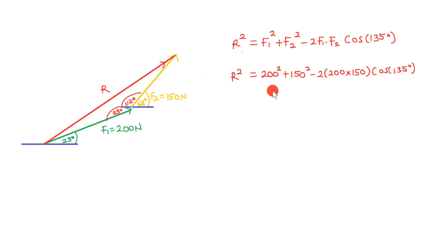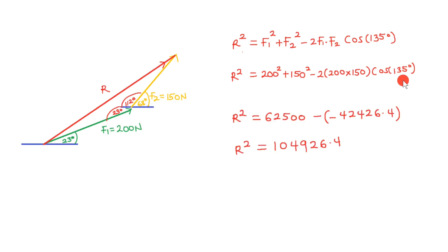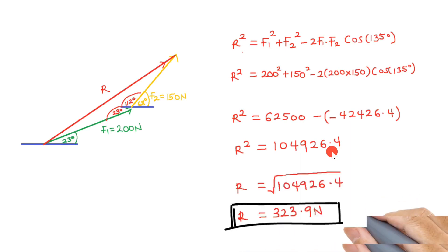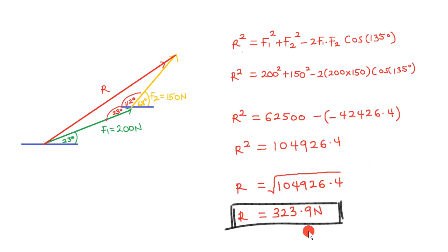To calculate the resultant force, we apply the cosine rule: R² = F1² + F2² − 2·F1·F2·cos(135°). Substituting F1 = 200 N and F2 = 150 N: adding 200² and 150² gives 62,500, and 2×200×150×cos(135°) gives a negative value, so both terms are added together. Taking the square root of the result gives R = 323.9 newtons.